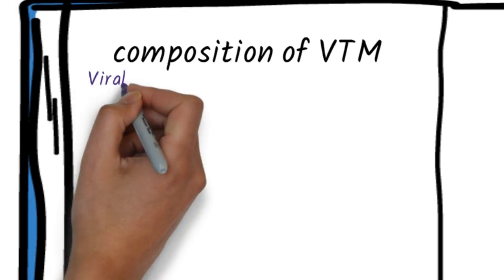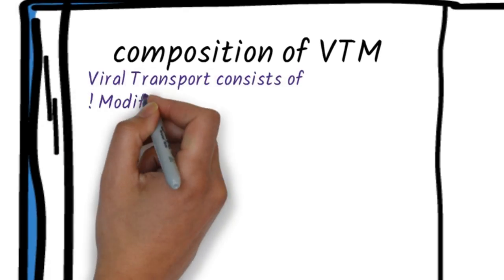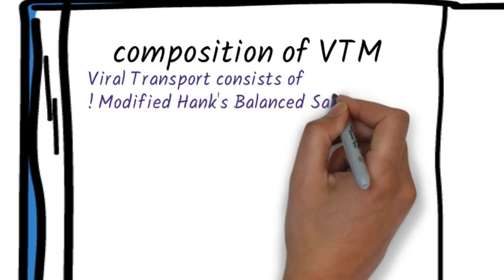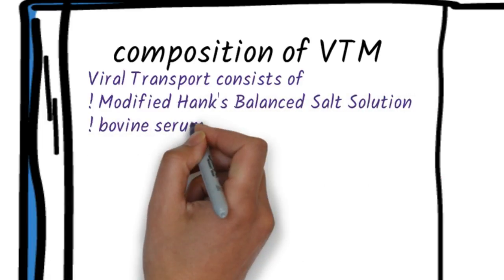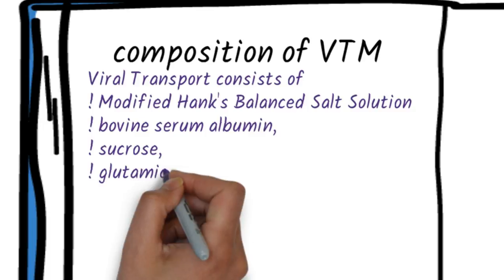Now we see the composition of VTM. Viral transport consists of modified Hanks balanced salt solution, bovine serum albumin, sucrose, glutamic acid, and gelatin.